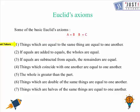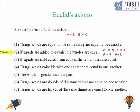The second axiom says: if equals are added to equals, the wholes are equal. So if a equals a and b equals b, then a + b is always equal to a + b. The third axiom is quite related to the second — we just use a different operation: if equals are subtracted from equals, the remainders are equal.